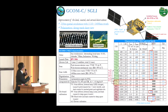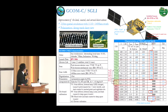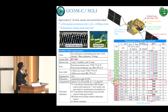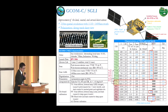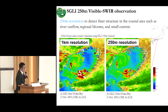This is the overview of GCOMC. This is a picture, and the global daily coverage is shown here. GCOMC will be launched in Japanese fiscal year 2016, and the sensor has a maximum resolution of 250 meters. So what is the significance of this resolution difference?